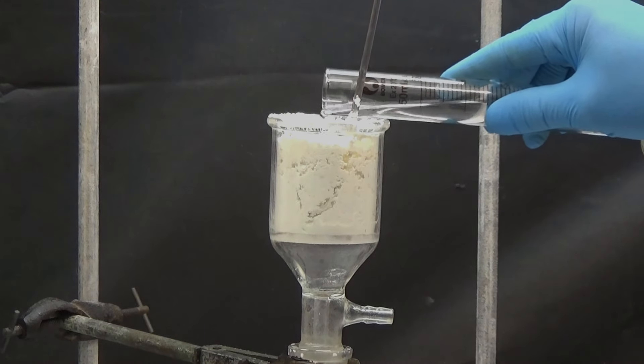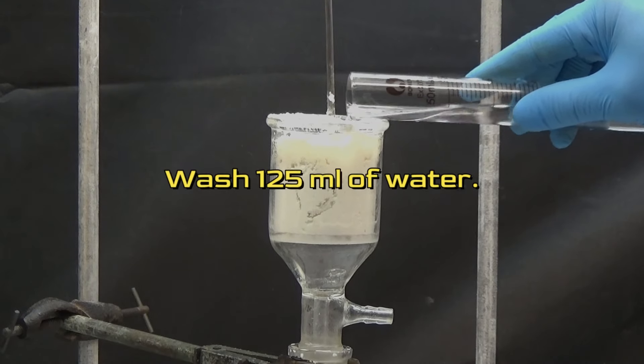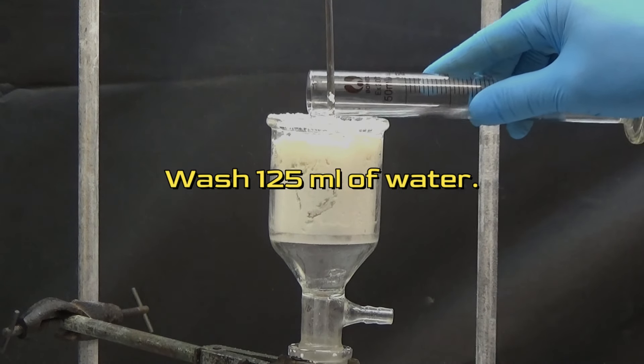To wash the obtained product, we first wash it with 250 milliliters of water to eliminate residual ammonium chloride.